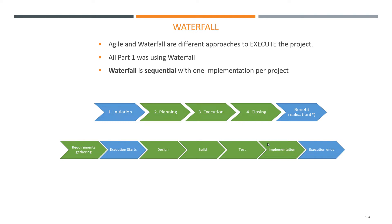What we've seen in part one was Waterfall, and Waterfall is usually the way the project management method is being taught. Because once you know Waterfall, it's just a matter of switching things around to go into Agile. Waterfall and Agile would have the same initiation, sometimes the same planning, and definitely the same closing. But it's more or less the execution and the end of planning — when you do the requirements gathering — that will change a little bit.